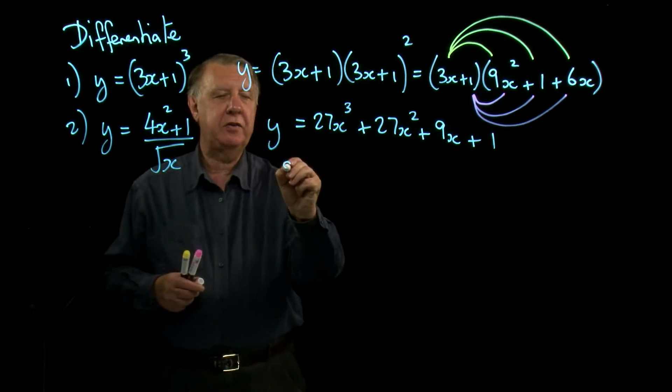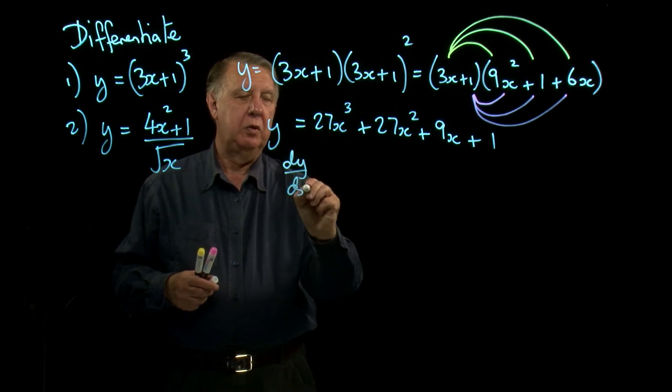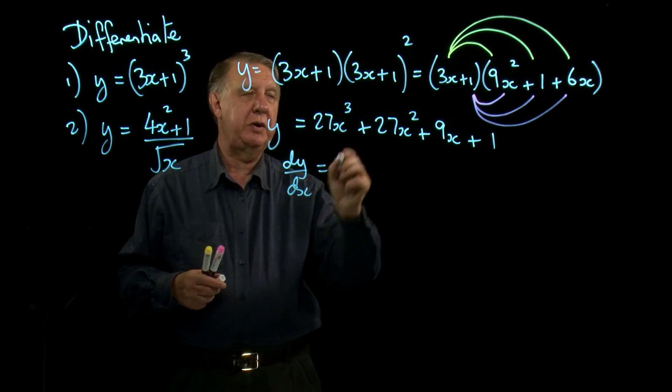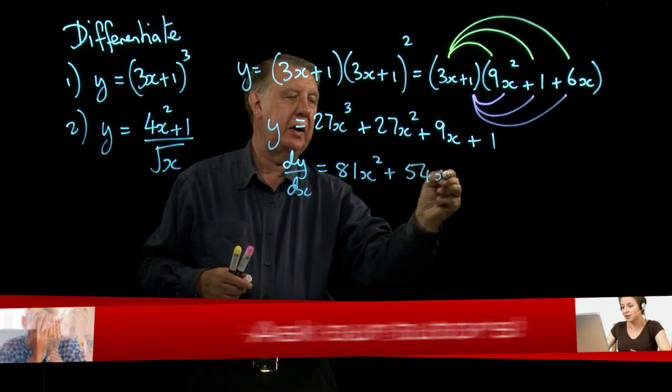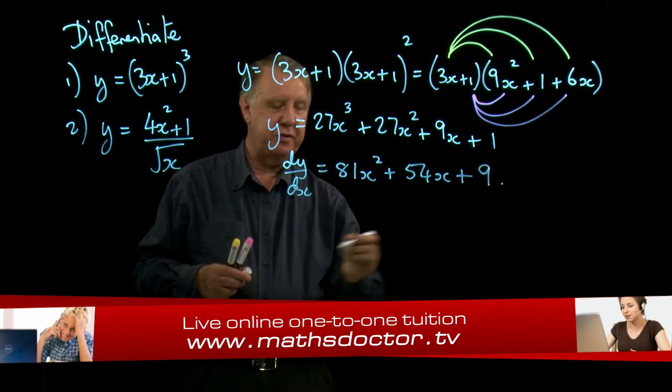So dy by dx is, bring down the power, 81x squared plus 54x plus 9.